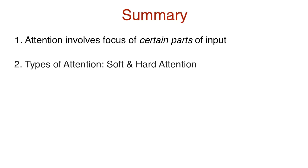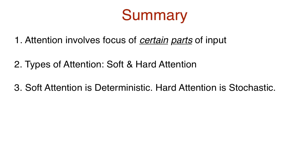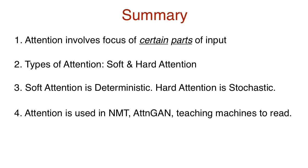Here are some things to remember. Attention involves focus in high resolution on certain parts of an input, while the rest of the input is in low resolution, or is blurred. Two types of attention are soft attention and hard attention. Soft attention is deterministic, while hard attention is stochastic. Attention can be used for non-image inputs, like neural machine translation, attention GANs, and answering questions from text.